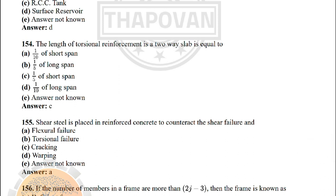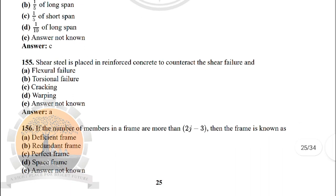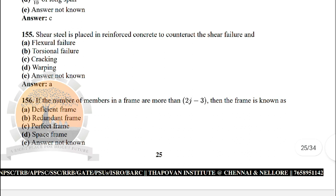Next: the length of torsional reinforcement in a two-way slab is equal to — the correct answer is option C: 1/5 of the short span. Next: shear steel is placed in reinforced concrete to prevent shear failure and — the correct answer is option A: flexural failure.